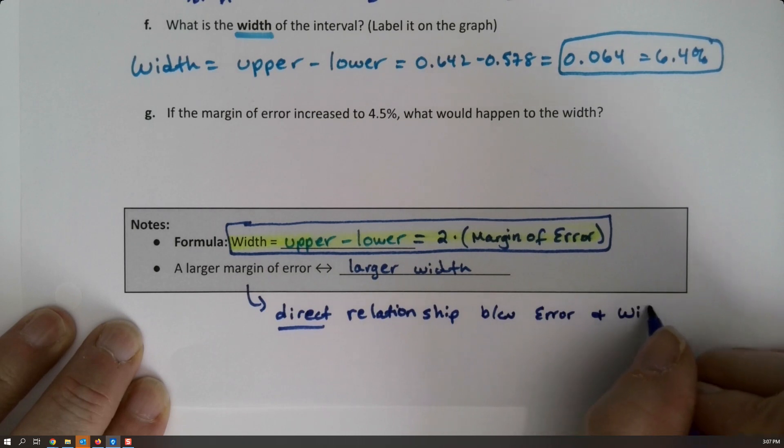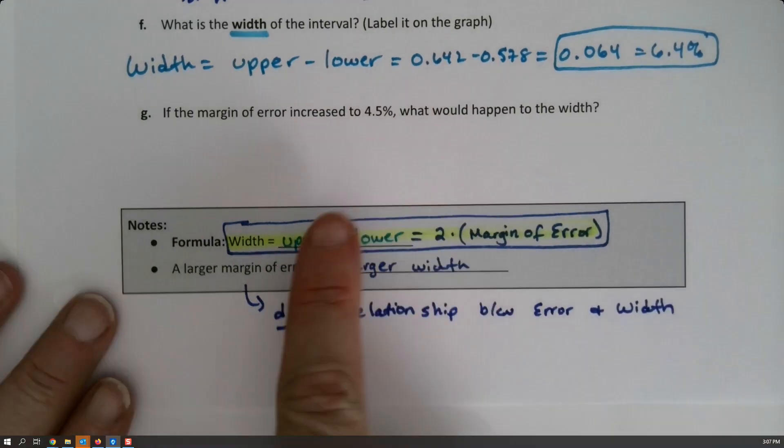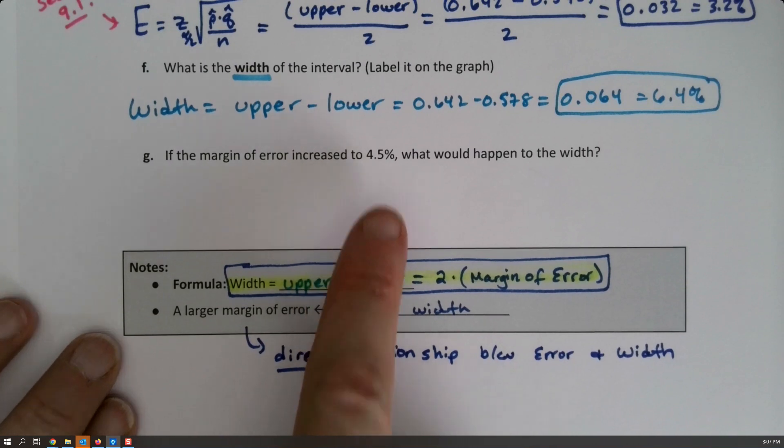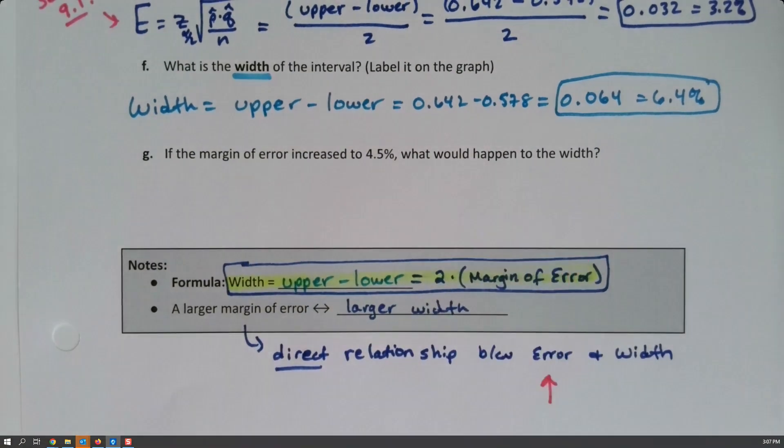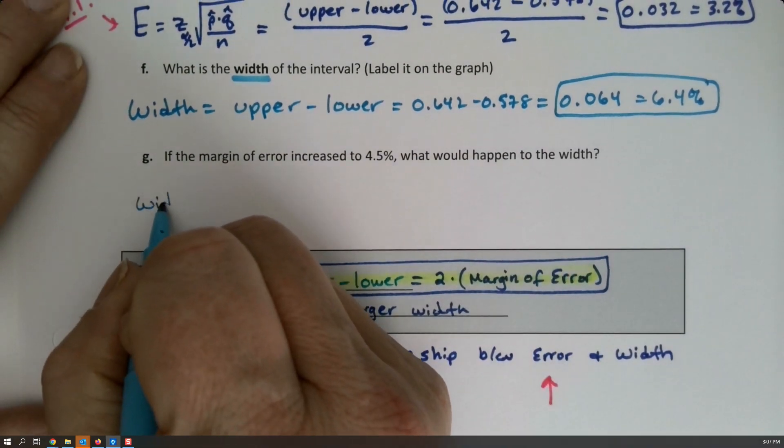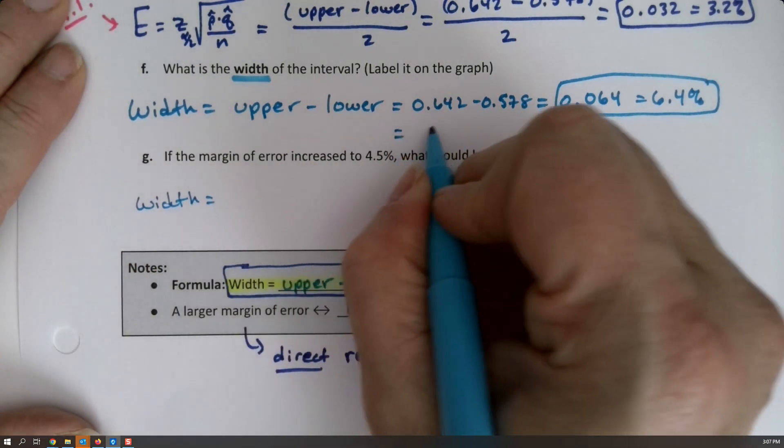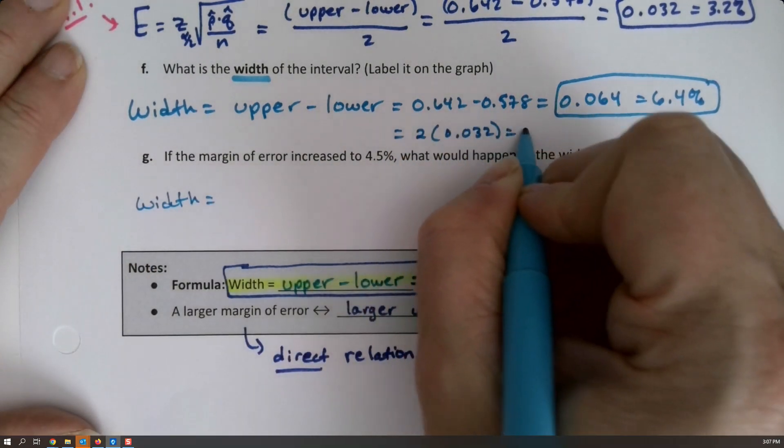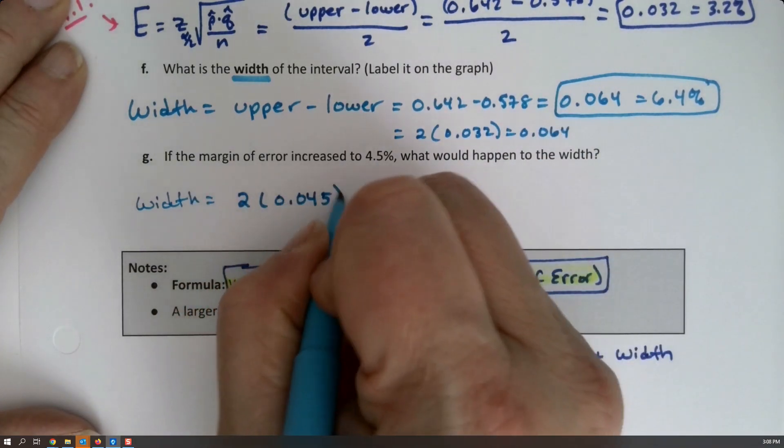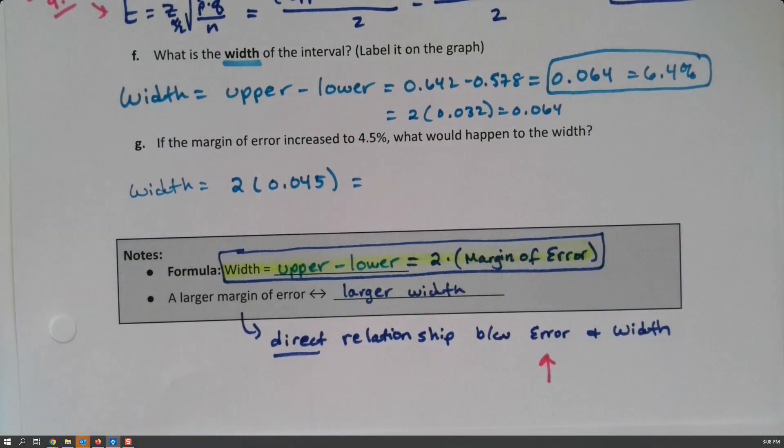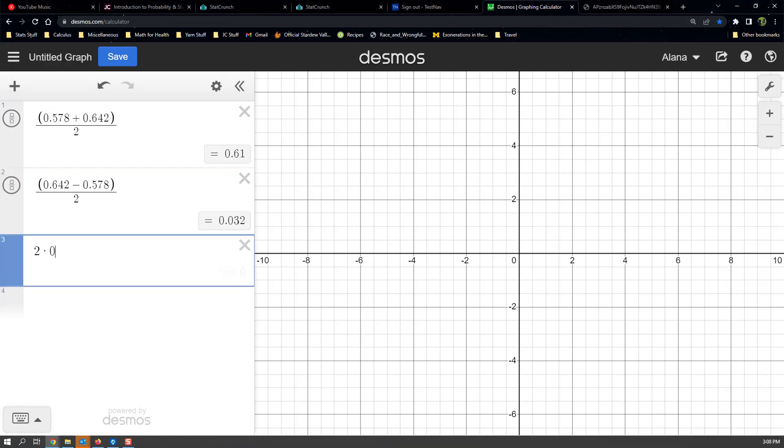When error goes up, and that's what we're about to see here. When the error goes up, so we're going to increase that error to 4.5 percent, let's see what happens to the width. So the width then would become two of the errors. So this one was two times 0.032 which is 0.064. This one's two times that error is 0.045. Okay, well two times 0.045 is 0.09, but I can prove it. Just to prove to you that was the case, there you go, 0.09. It's larger.